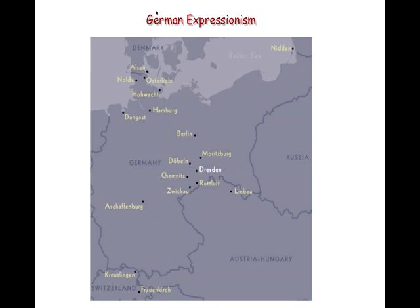German Expressionism is assigned initially the date 1905 as the start, and it is suppressed by Adolf Hitler in 1933, when it is referred to as degenerate art.